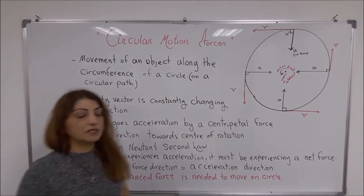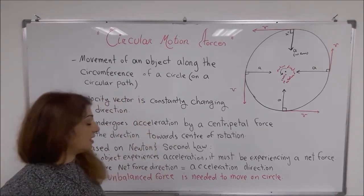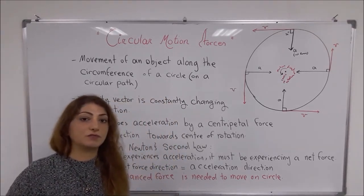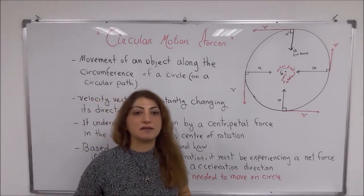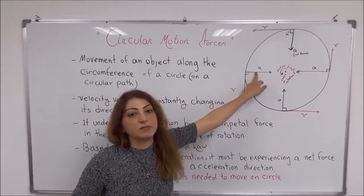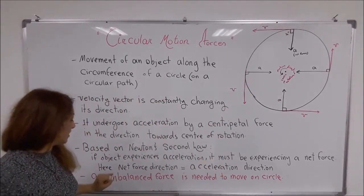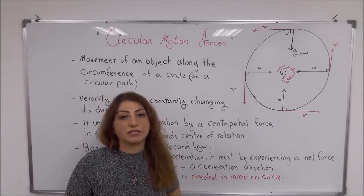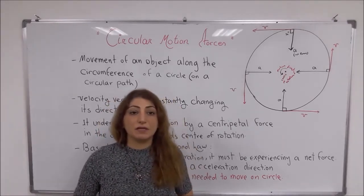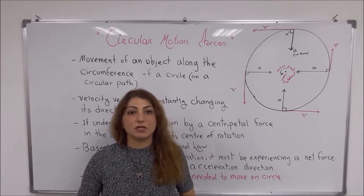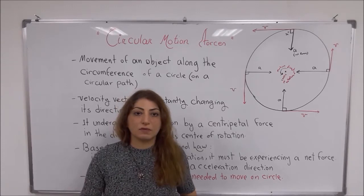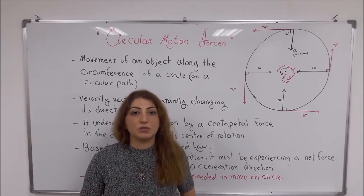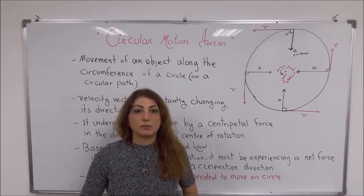Based on Newton's second law, if an object is experiencing an acceleration, it should also experience a net force. The net force direction is the same as the direction of the acceleration vector — towards the center. An unbalanced force is needed to keep objects moving on a circular path. Let's look at some equations needed to do calculations in circular motion force questions. If you want to see how to answer questions related to this chapter, come with me to see the next part of this video.